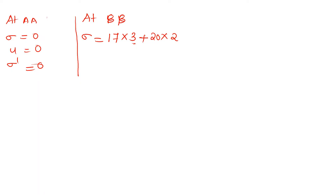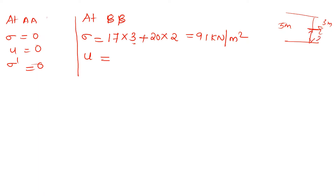At the interface layer BB, the saturated depth is 2 meters below the water table. The total stress at BB is 91 kN/m². For the pore pressure U: the water table is 3 meters below the surface, the interface is 2 meters below the water table, so the pore pressure is gamma_w into 2 meters, which equals 19.62 kN/m².